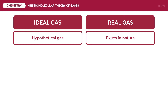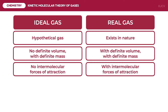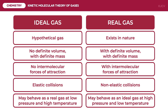Real gases have definite volume and definite mass. They also have intermolecular forces of attraction. Kinetic energy is also transformed into other types of energy, thus they have non-elastic collisions. Lastly, sometimes ideal gases may behave as real gases at low pressure and high temperature, and real gases may behave as ideal gases at high pressure and low temperature.